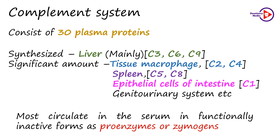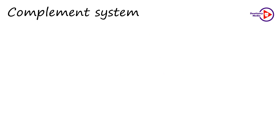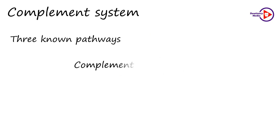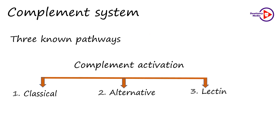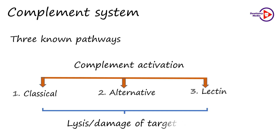They need to be activated, and on activation they react in a specific sequence as a cascade. There are three known pathways for complement activation: the classical pathway, the alternative pathway, and the lectin pathway. The ultimate aim is to cause lysis or damage of the target cell.